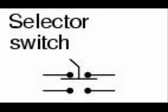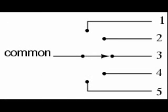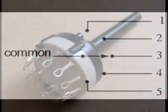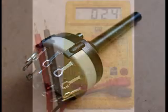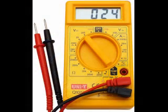There is another type of selector switch. This is the symbol for that type — it has a common connection that is connected to one of several contacts. This picture shows the back of this type of selector switch, where you can see the connection terminals for the wires. This type of selector switch is found on many multimeters used for electrical measurements.